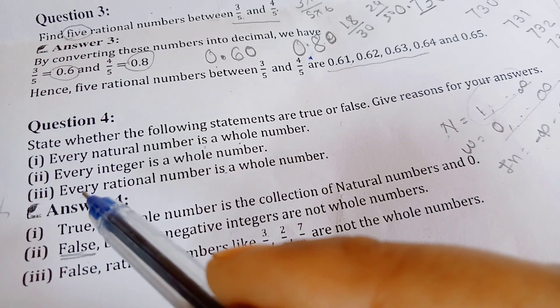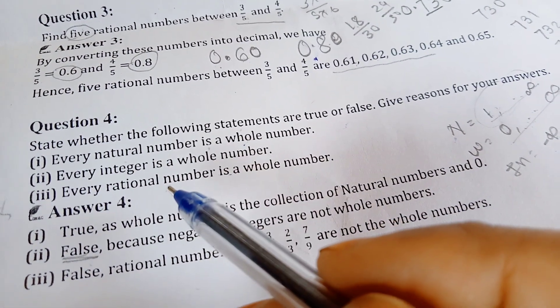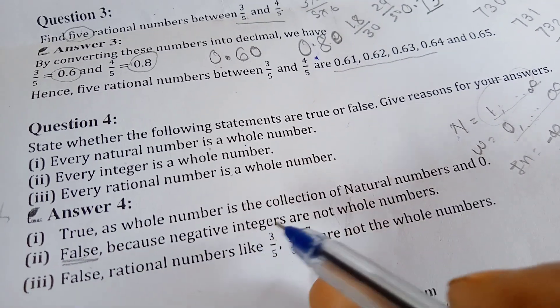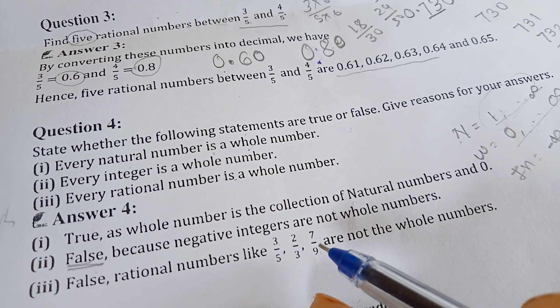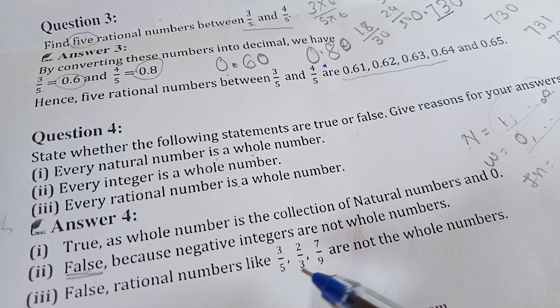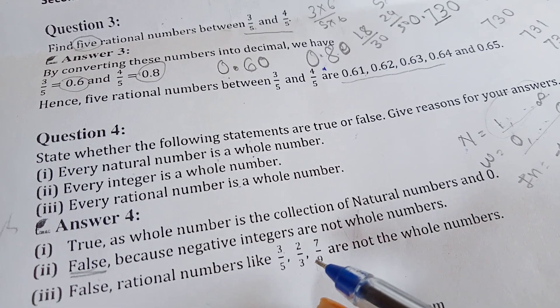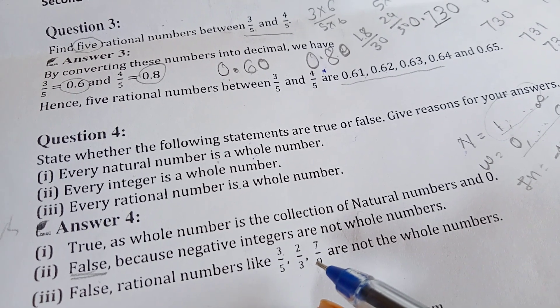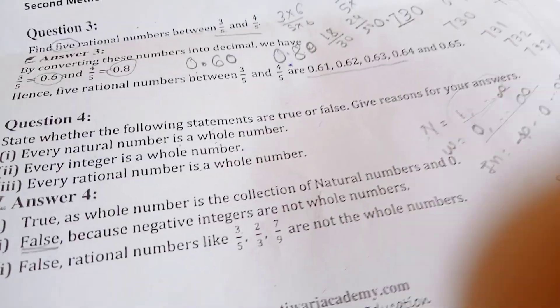Third is, every rational number is a whole number. Now, you will tell us, are all rational numbers whole numbers? First of all, how do you get rational numbers? Like 3 by 5, 2 by 3, 7 by 9. What are the numbers in numerator and denominator? Now, if you solve them, how do you get the answer? You will get the answer in decimal. You will not get whole numbers. Because whole numbers are not decimals. So this is False.